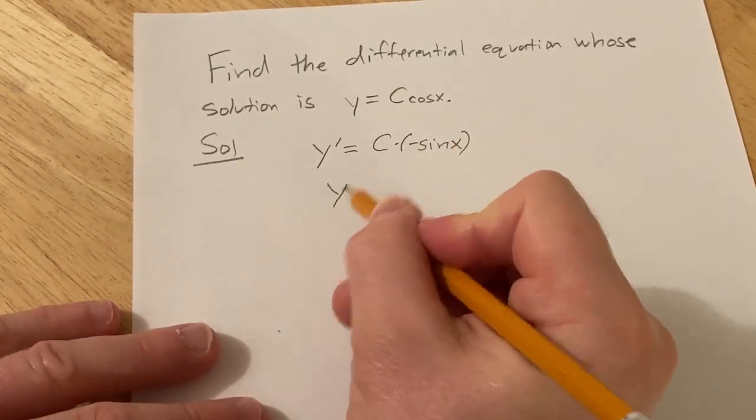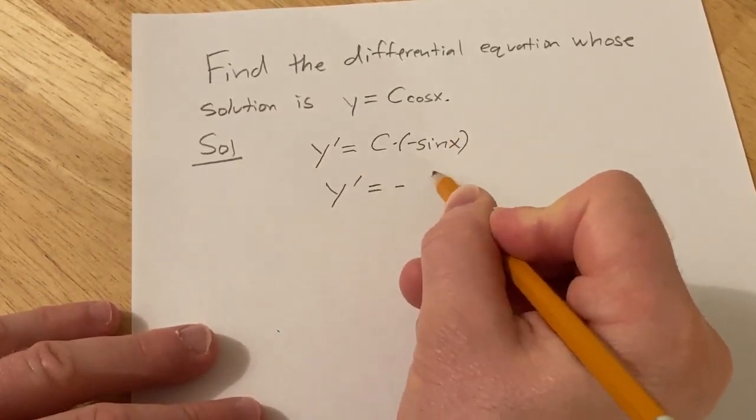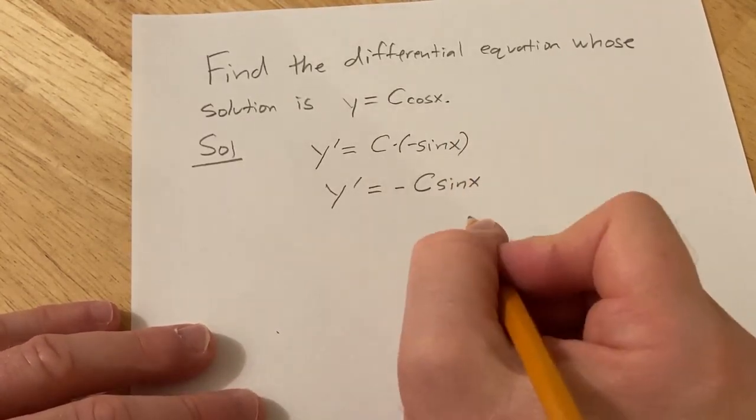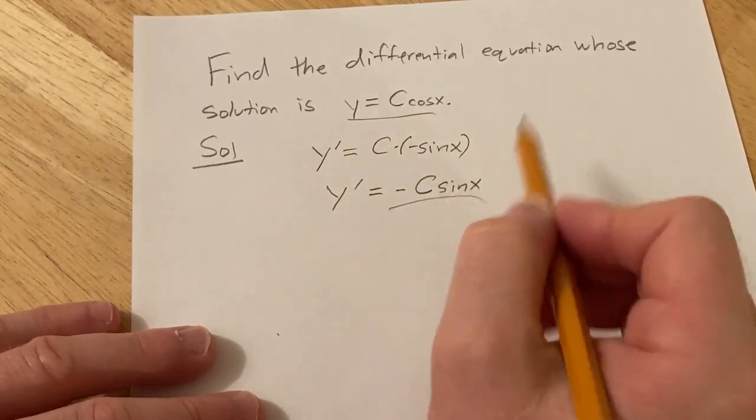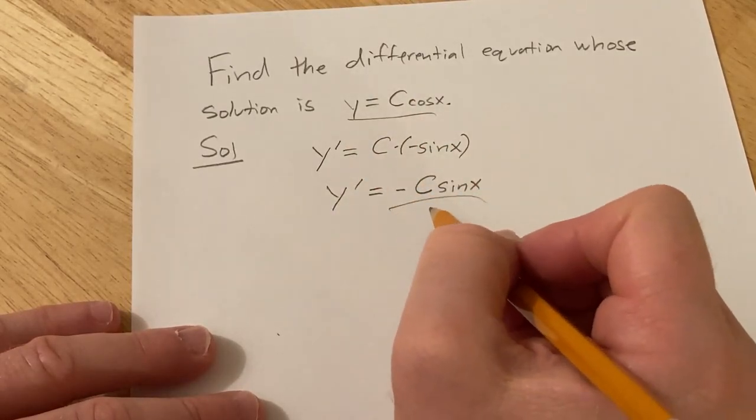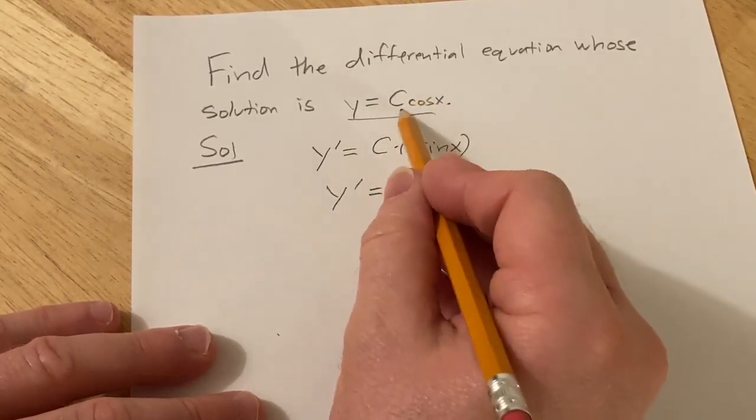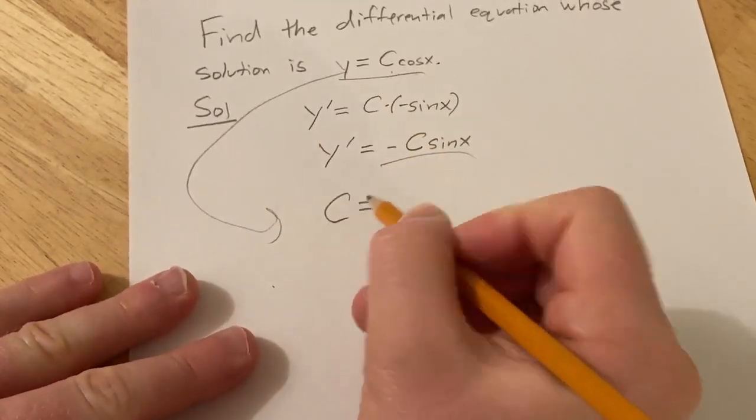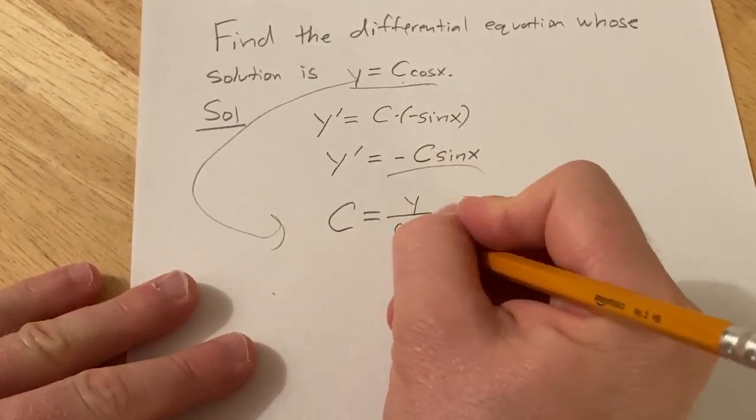So we can rewrite this as y prime equals negative C sine x. We somehow need to create an equation so let's go ahead and solve for C. If we solve this one for C we basically divide by cosine. So from this one we get C equals y over cosine x.